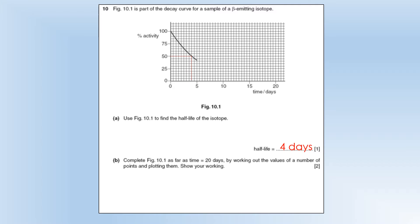So now we want to complete the diagram as far as the time equals 20 days by working out the values of the number of points. So we know it would be at 25% after 8 days, and then 12.5% after 12. So that gives us 2 more points to plot. And then we can draw a line making sure we go past 20 days as it says.